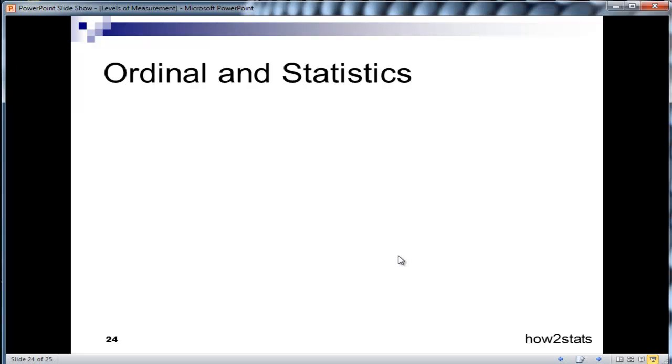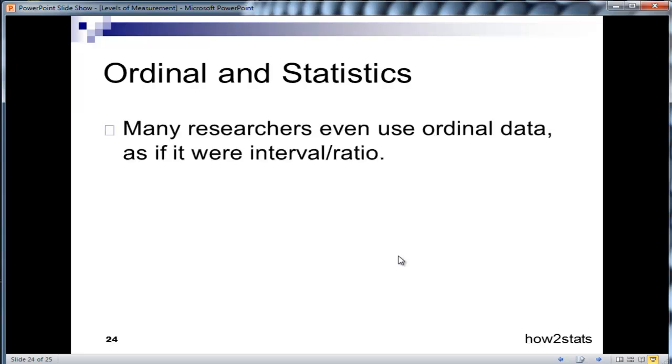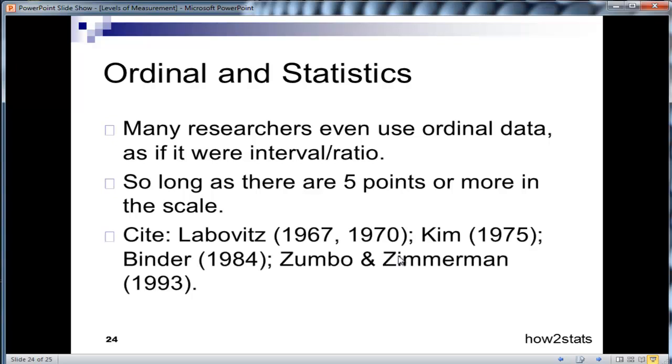Now ordinal scales are often treated as interval themselves, maybe not ratio, but they are treated as interval by many researchers. And what they say is that as long as it has five points or more in the scale, then we can apply interval ratio type statistics on those data. And they'll cite various people that have shown empirically that it seems okay to apply interval ratio parametric statistics on ordinal data.